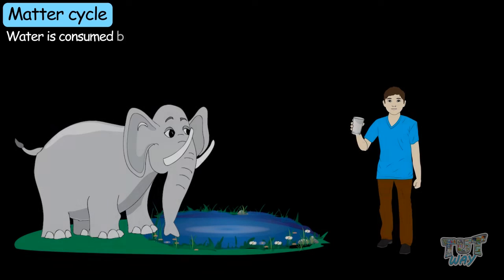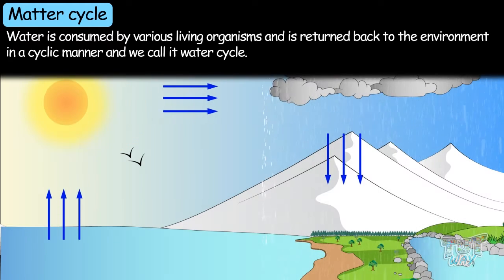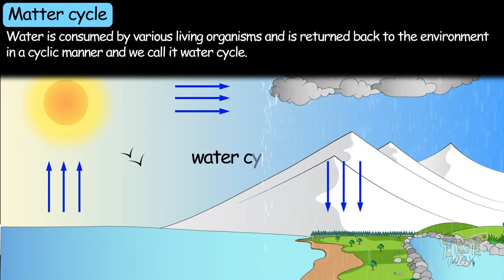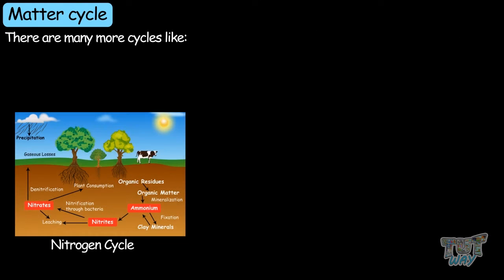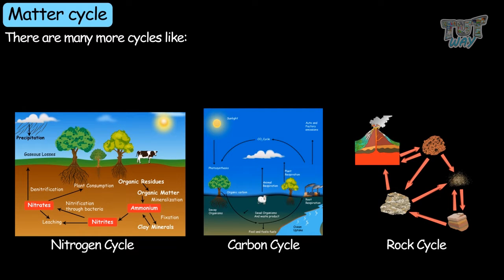Any matter — say water — is consumed by various living organisms and is returned to the environment in a cyclic manner. We call it the water cycle. There are many more cycles: the nitrogen cycle, carbon cycle, rock cycle, and so on. These are all called matter cycles.